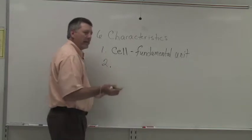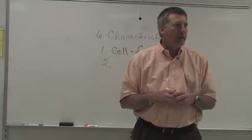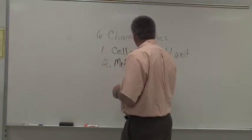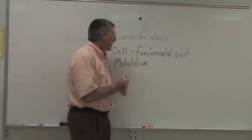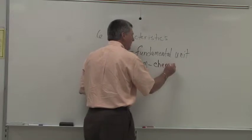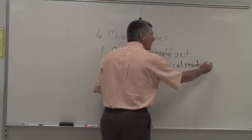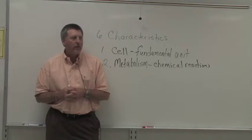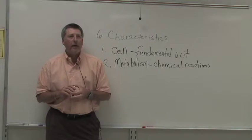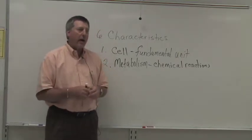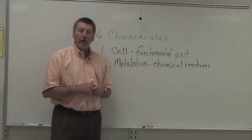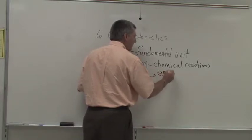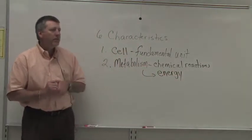Think about a red blood cell or a muscle cell in your body, for example. A second characteristic of life is the concept of metabolism. Metabolism could be defined as the chemical reactions necessary for life. There are two types: anabolism and catabolism — basically building reactions or breaking down reactions, reactions that require energy or reactions that release energy. Metabolism is about how organisms use energy.